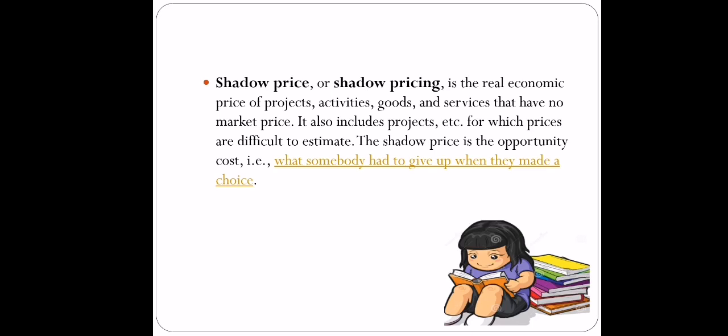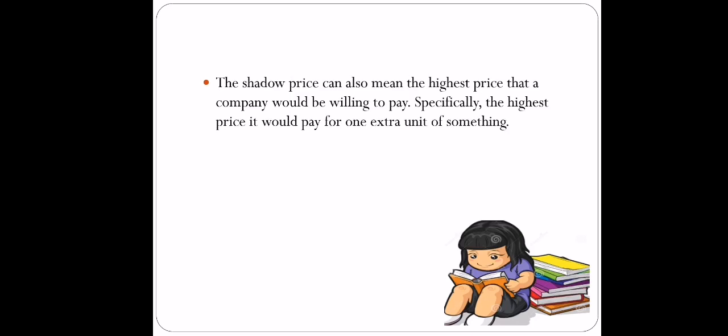We all know that if we want something, we need to compromise on one or the other thing. How much we can compromise and how badly we need that particular thing — on the basis of that, the price of those goods or services is decided. The shadow price means the highest price that a company is willing to pay for one extra unit of something. If the company desires something very badly because it can be of great long-term benefit, then they will be ready to pay any price for that, taking it as an investment.